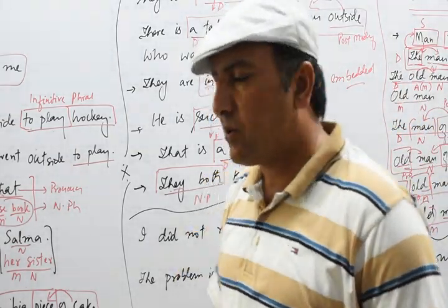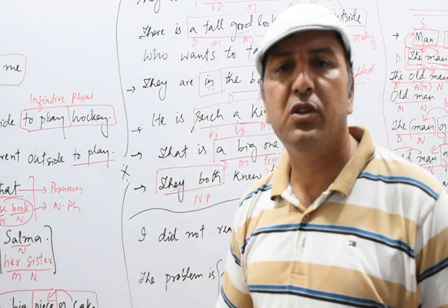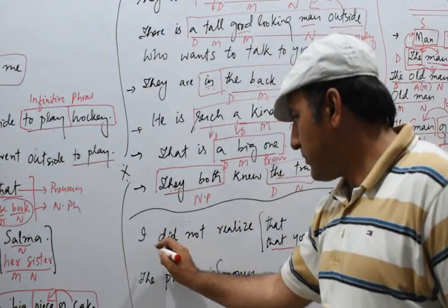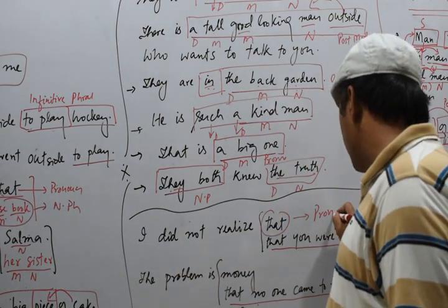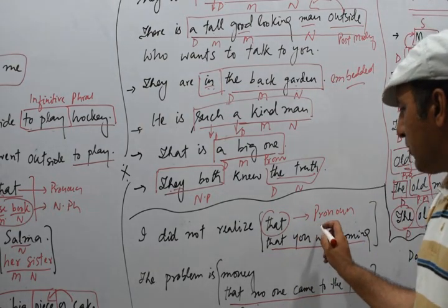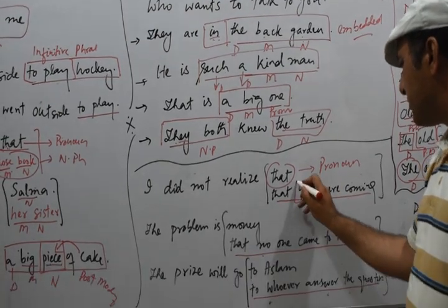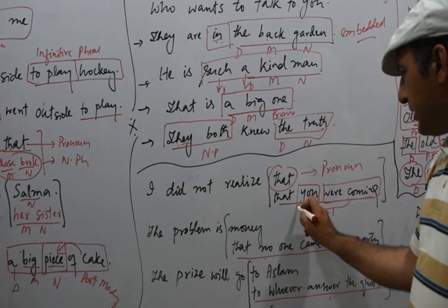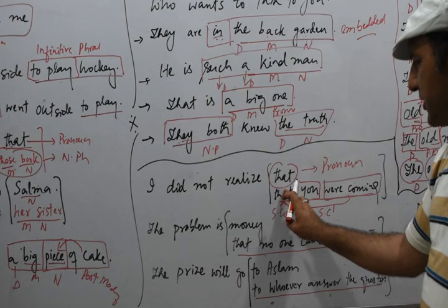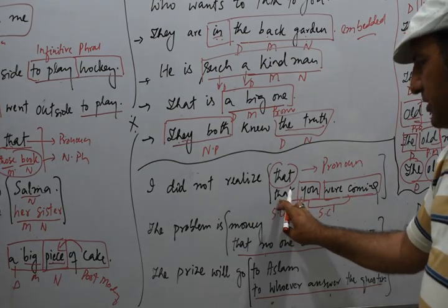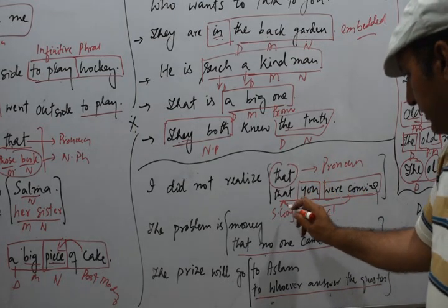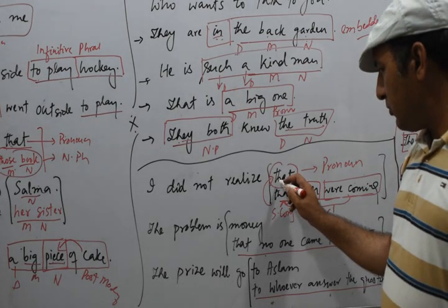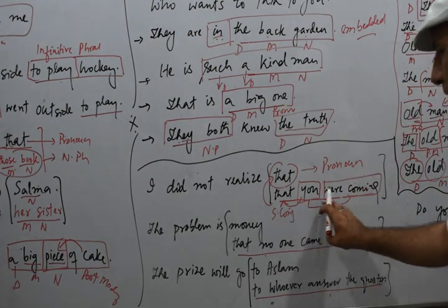Now let's talk about noun clause. Any clause which replaces a noun is known as a noun clause. For example: 'I did not realize that.' Here 'that' is a pronoun. We want to replace this pronoun with a noun clause. The clause has subject 'you' and predicate 'are coming,' so combined we call it a clause. It is preceded by the subordinate conjunction 'that,' so it is a subordinate clause. Thus 'that you are coming' is a noun clause — it has replaced the pronoun.